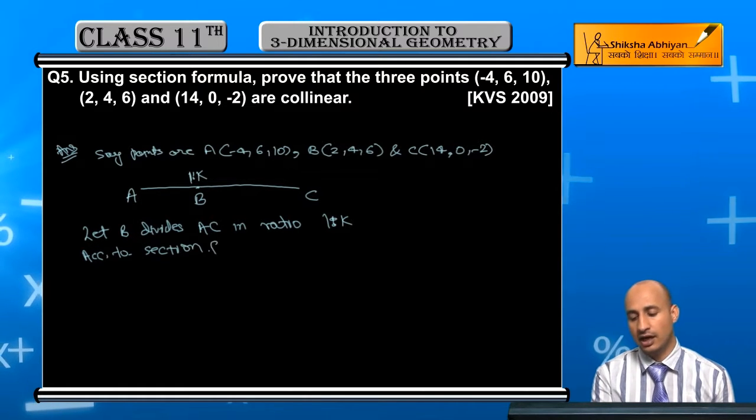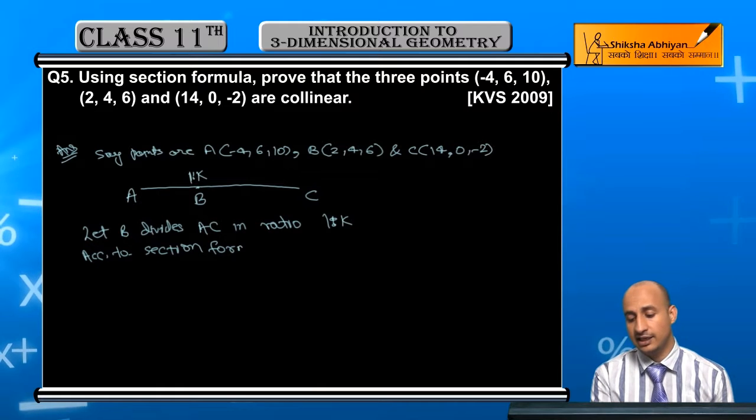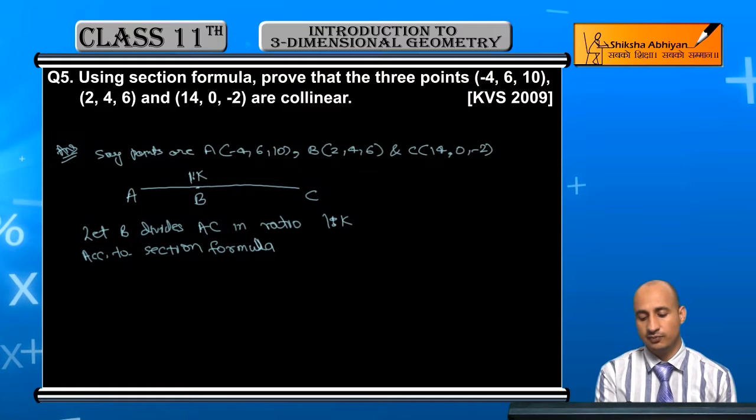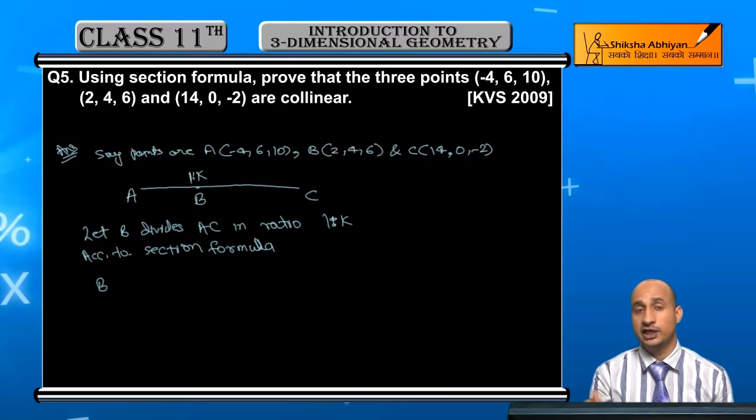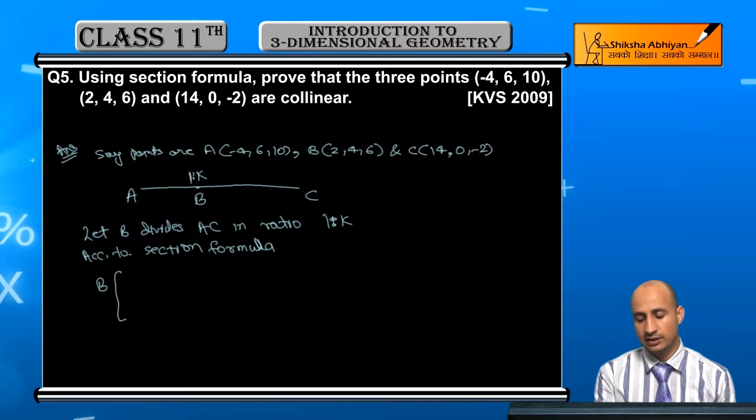B's coordinate, you can see internally. B's coordinate internally by section formula, coordinates of B, what are we going to do? C's coordinate x2, y2, z2 and A's coordinate x1, y1, z1. So this will be 1 into 14.